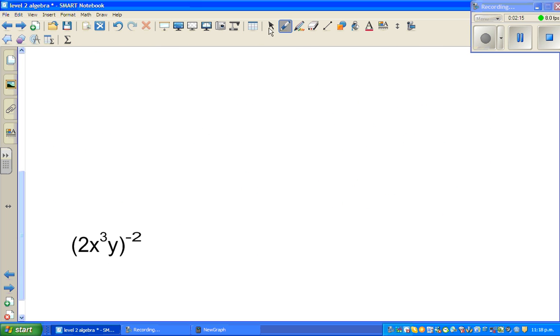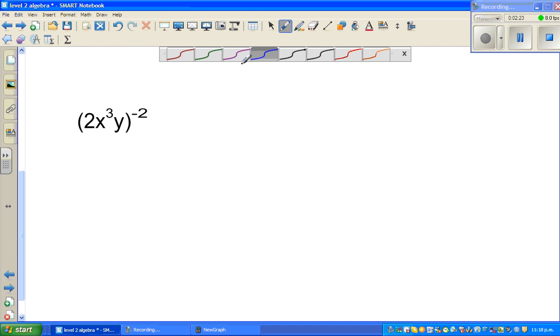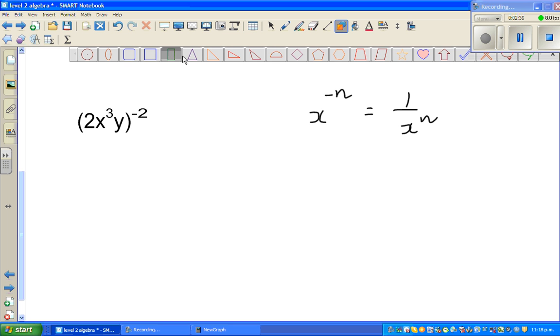Okay so one more question. 2x cube y to the power negative 2. Now the general rule for negative power is x to the power negative n is 1 over x to the power n. This is the general rule. Now what does this mean?